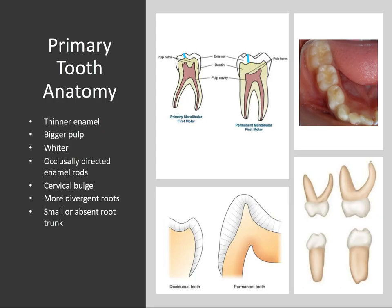The dentin layer is also thinner in primary teeth. So if the enamel and the dentin are thinner, the pulp is naturally going to be larger in comparison. Because these teeth have thinner mineralized layers than permanent teeth, they're more prone to caries, tooth wear, and also to pulp exposure when preparing them for restorations.